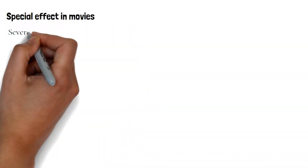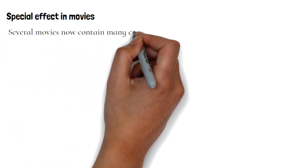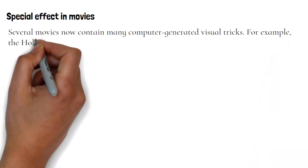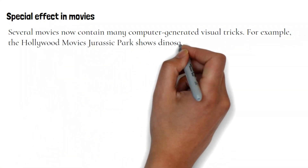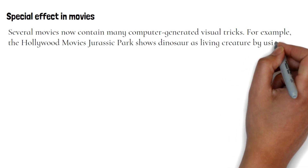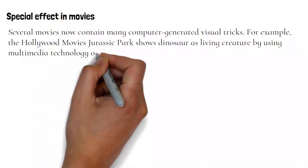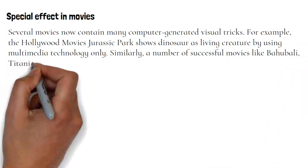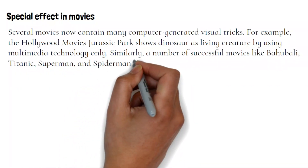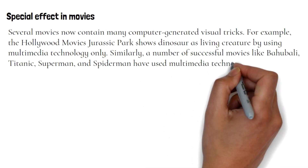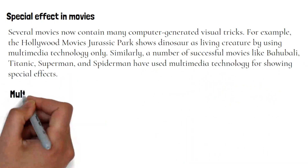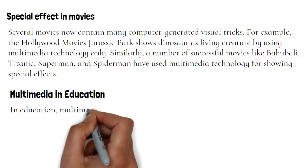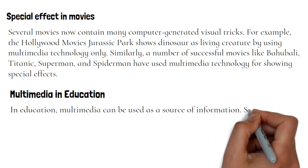Several movies now contain many computer-generated visual tricks. For example, the Hollywood movie Jurassic Park shows dinosaurs as living creatures by using multimedia technology. Similarly, successful movies like Bahubali, Titanic, Superman, and Spider-Man have used multimedia technology for showing special effects.